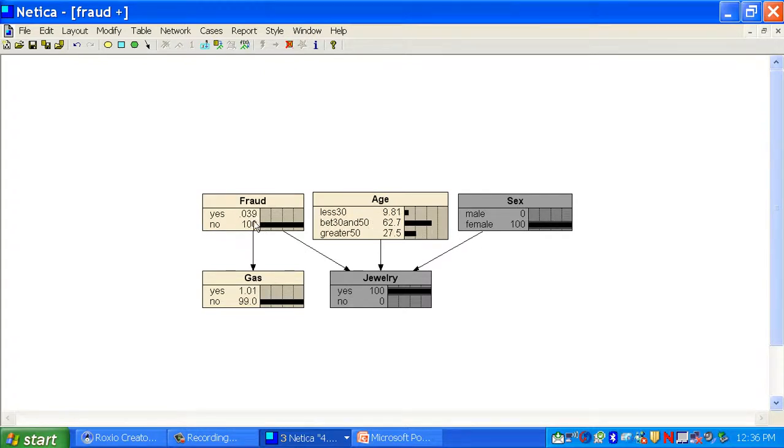Psychologists call this discounting. If, on the other hand, I find out it's a female, it goes down because females are likely to buy jewelry, making fraud less likely. If I found out it's a female between 30 and 50, it goes down even more because that's the most likely group to buy jewelry.